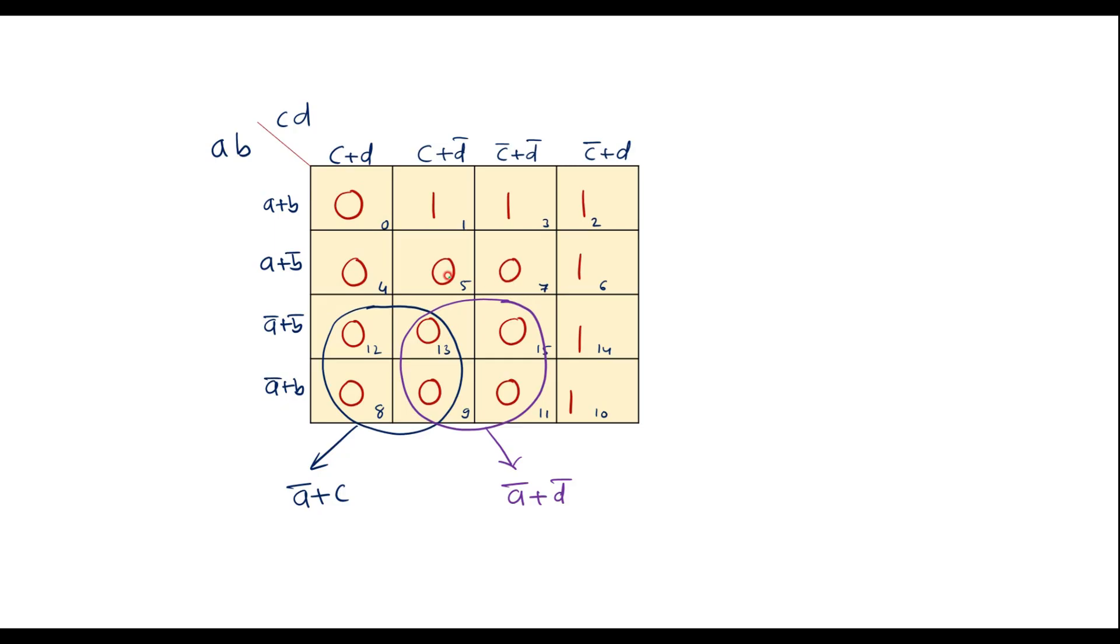So then we have here we have 0, 0. So this 0, 0 and this 0, 0 can make a quad.